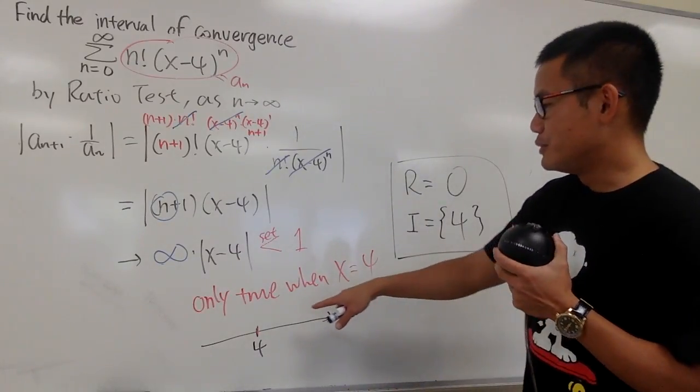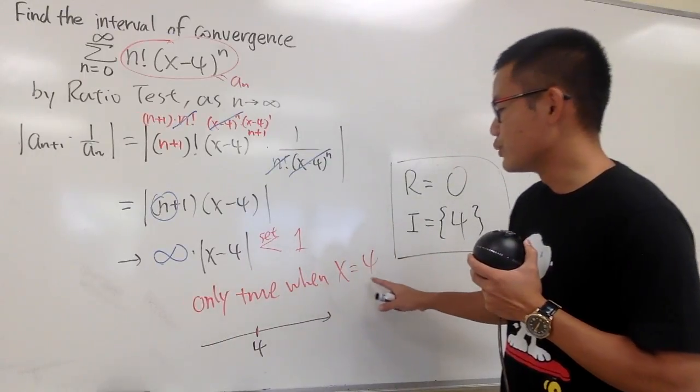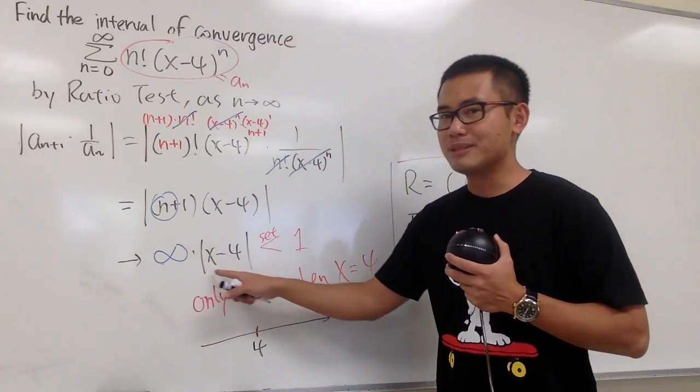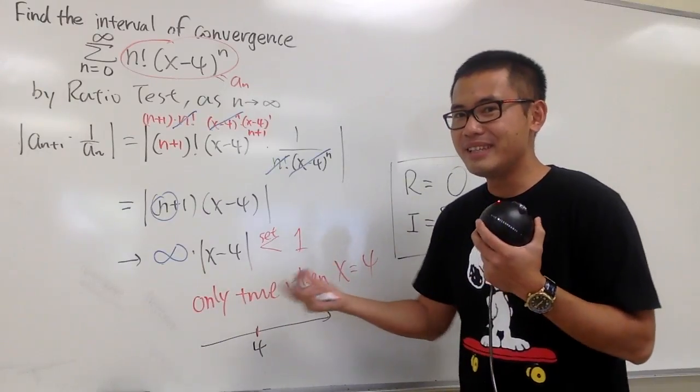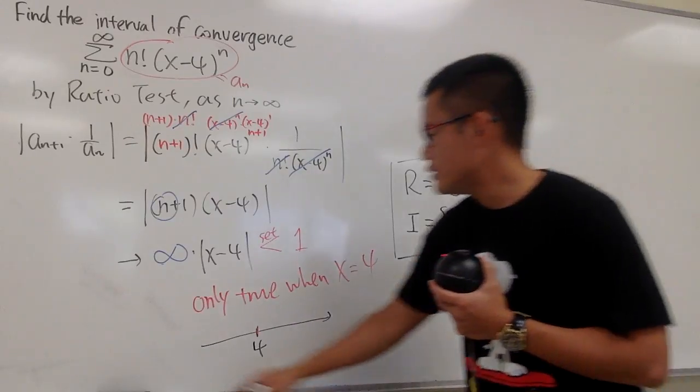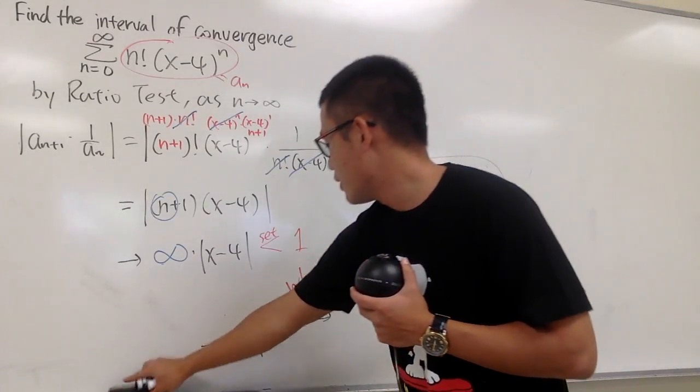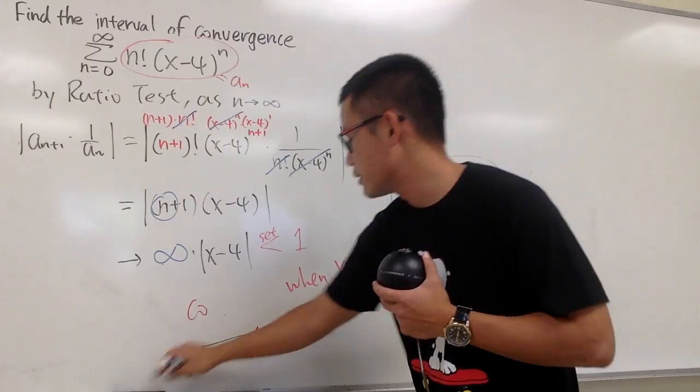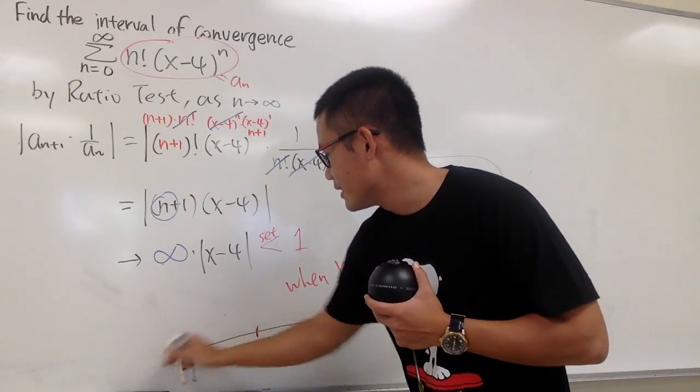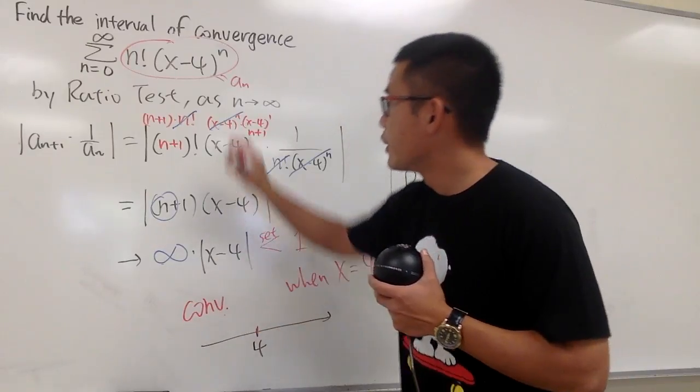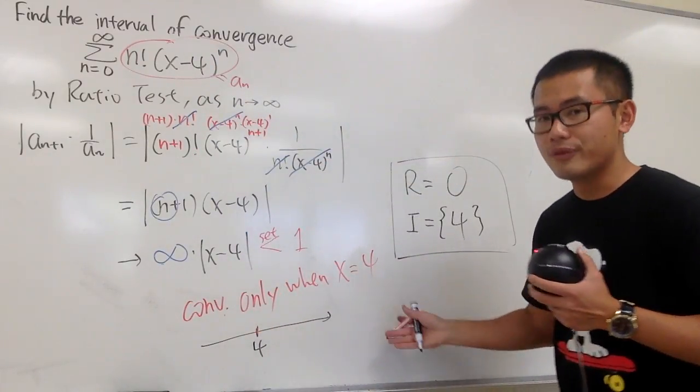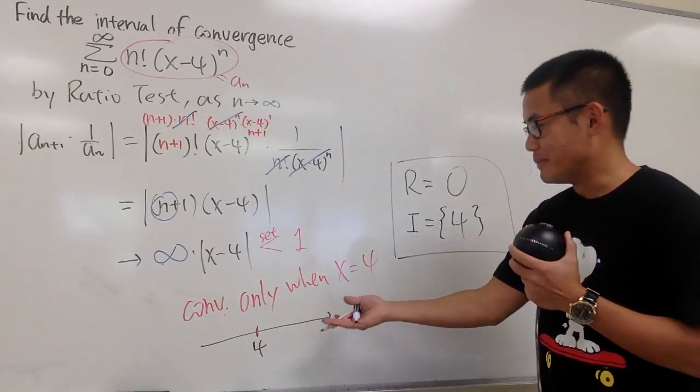I know some of you guys may be wondering if I should really say this is only true when x equals 4, because if I plug in 4 into here, I get infinity times 0, and that's technically indeterminate. But the deal is that I should really say this right here only converges.